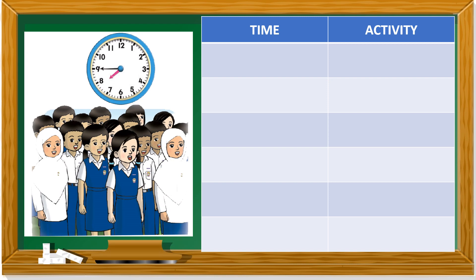The first activity — we look at the time first. The hour hand points between seven and eight, not yet eight, so it's seven something. The minute hand points to nine. Nine times five is forty-five. So it's 7:45 in the morning. What are they doing? Do you remember — when you stand straight and sing? This is assembly. In Malay it is called perhimpunan.